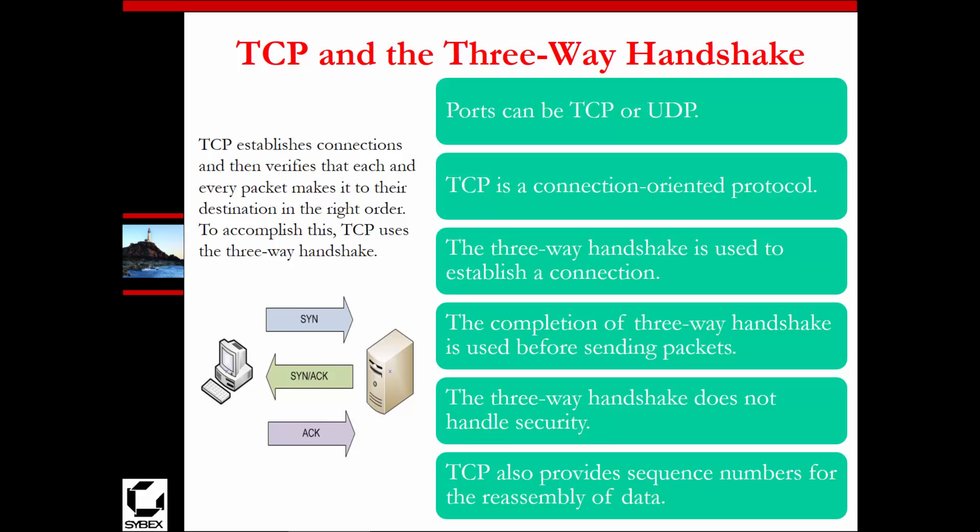The TCP three-way handshake is a process you have to become very familiar with. TCP is connection-oriented, which means it will establish a connection and verify that each and every packet makes it to the destination. It does this through a three-way handshake: a source will send a SYN, the destination will send a SYN-ACK, and then the source will send an acknowledgement or ACK. This three-way process verifies that we're setting up valid communication between source and destination, ensuring that if a packet isn't delivered or there's a delay, the source will resend it.